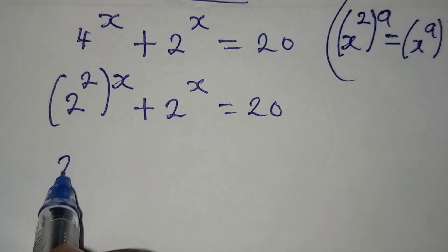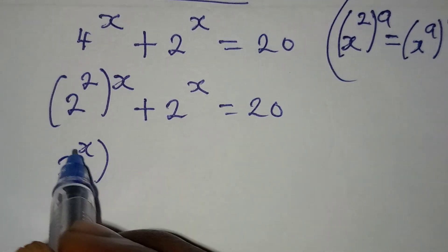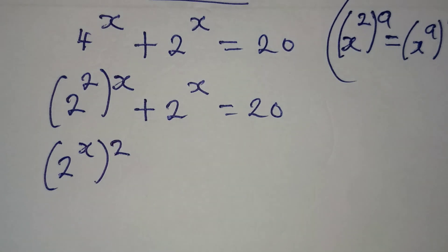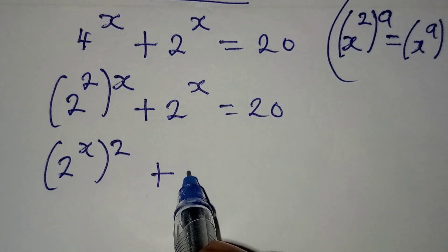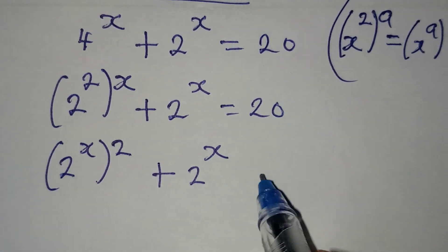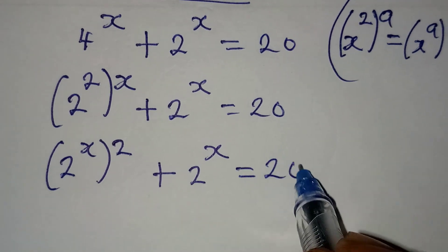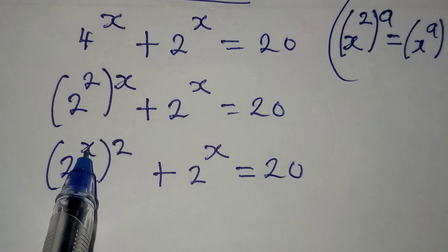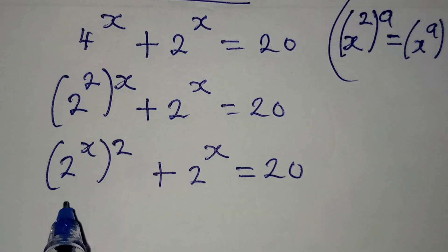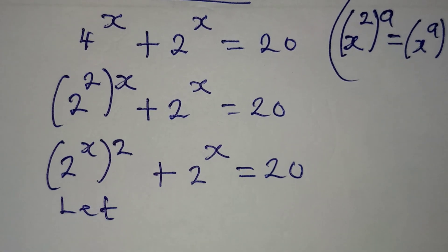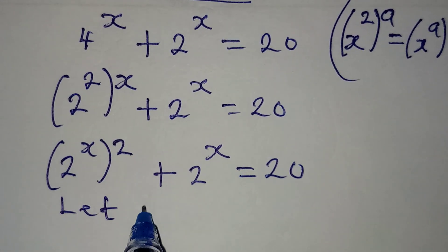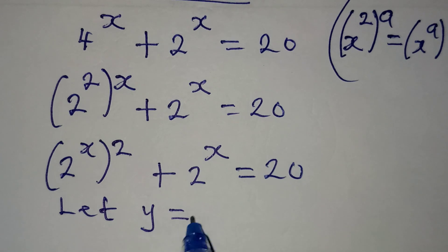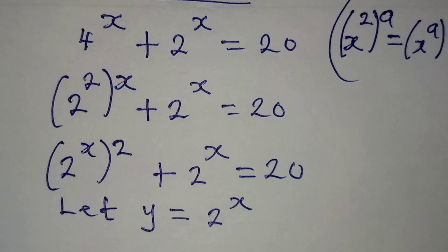So I'm going to have 2 to the power of x, and then 2 will be outside, plus 2 to the power of x, and this is equal to 20. I did this because I needed to have 2 to the power of x in two places. Now, let a letter represent 2 to the power of x. So y will be equal to 2 to the power of x.